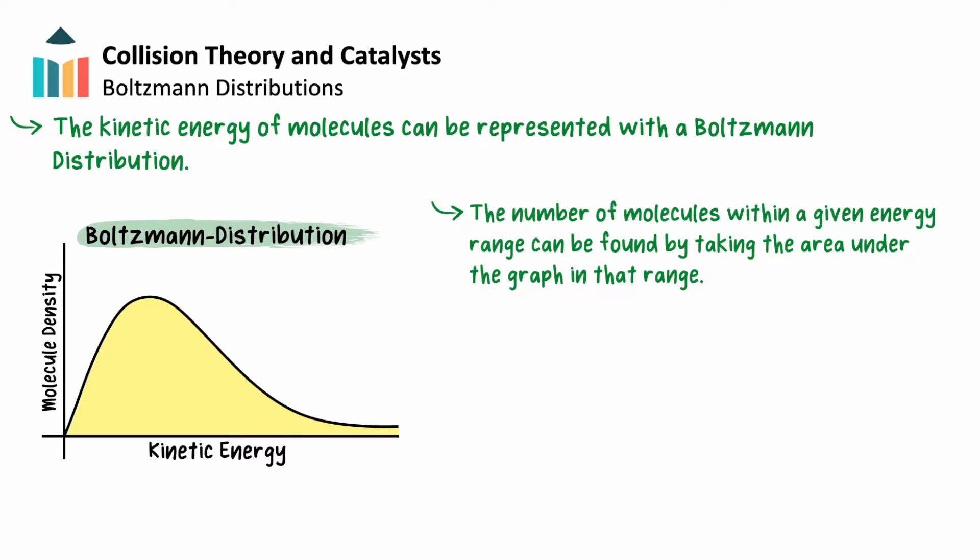There are no molecules with zero energy. The graph rises to a peak, representing the average or most commonly observed energy. It then tails off but never reaches zero. There is always at least a small probability of a molecule having very high energy.